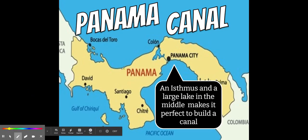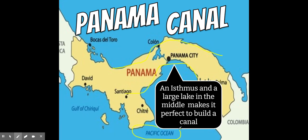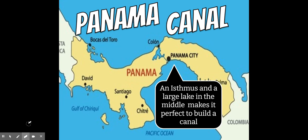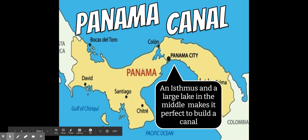With this isthmus — a skinny strip of land separated by two bodies of water, the Pacific on one side and the Atlantic on the other — and a big lake already existing in Panama, all they had to do was use dynamite to excavate land on both sides and change the elevation slightly. They set up a series of locks so a ship entering from the Pacific gets raised by flooding different chambers of water, then the water is released and the boat goes down through and forward.